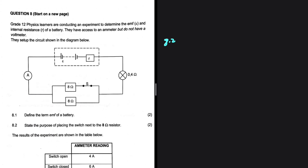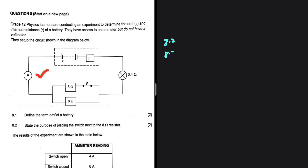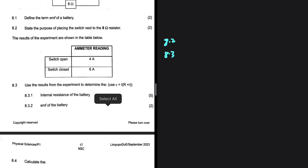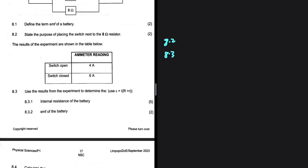They are placing the switch next to the 8 ohm resistor so that they can control the current in the circuit by changing the resistance. The only thing they have access to is an ammeter, so placing a switch there allows them to control the current by changing the resistance. That is 8.2.